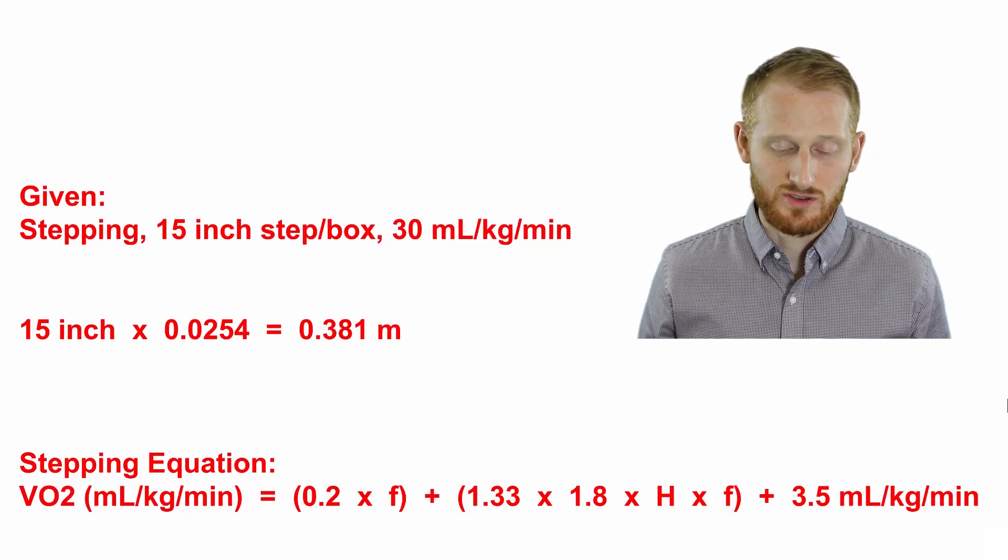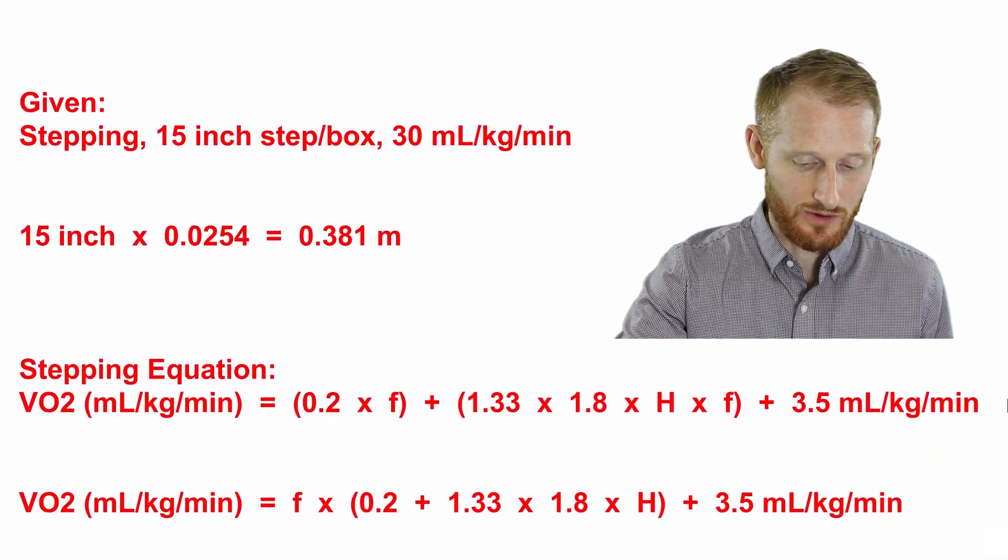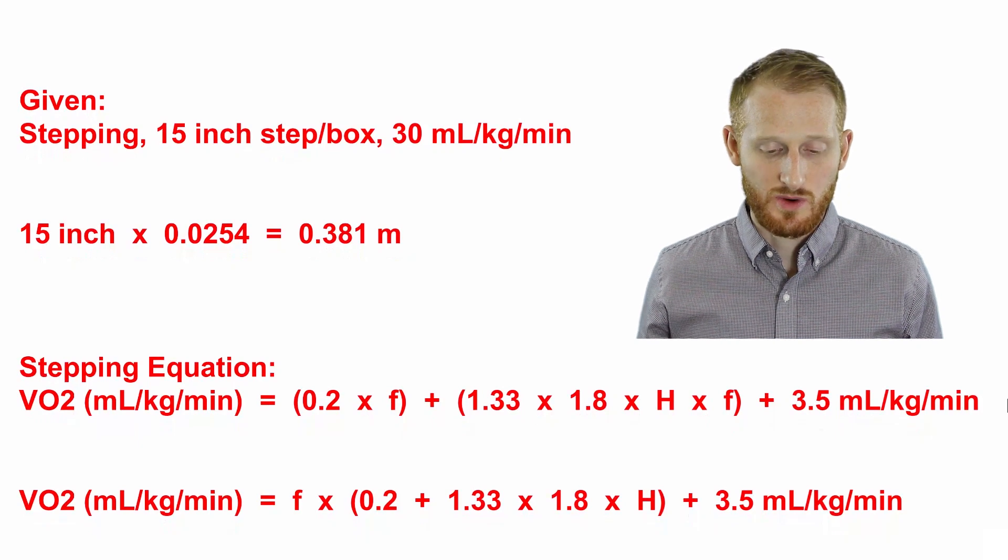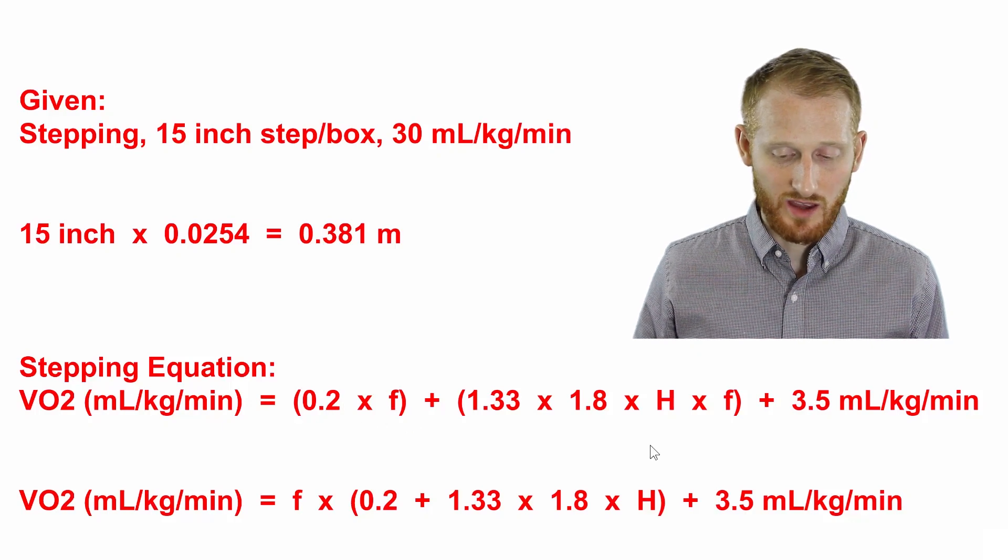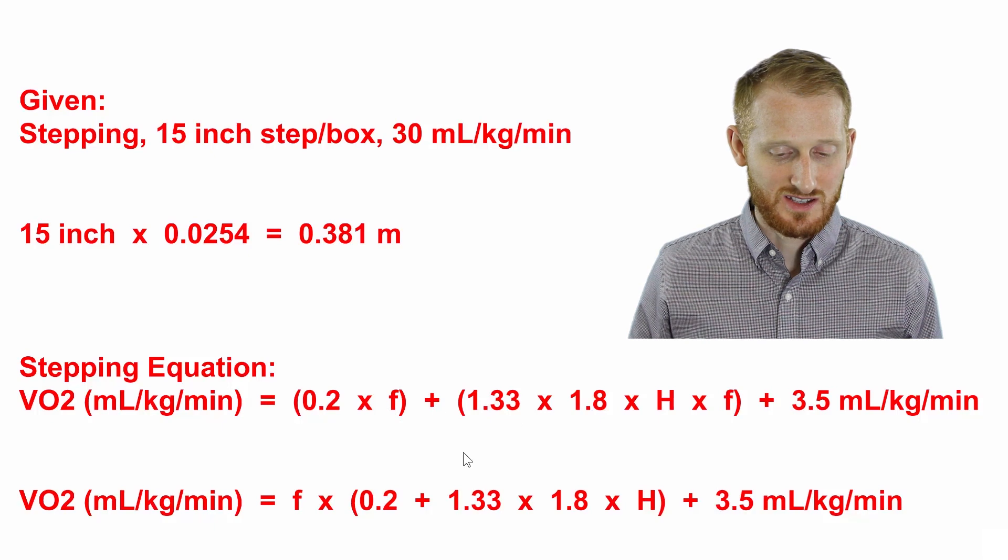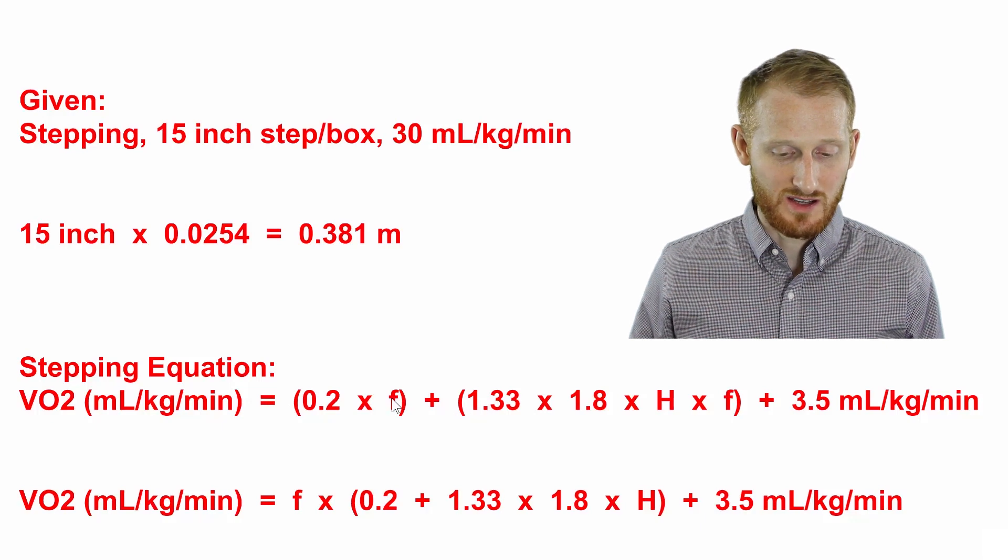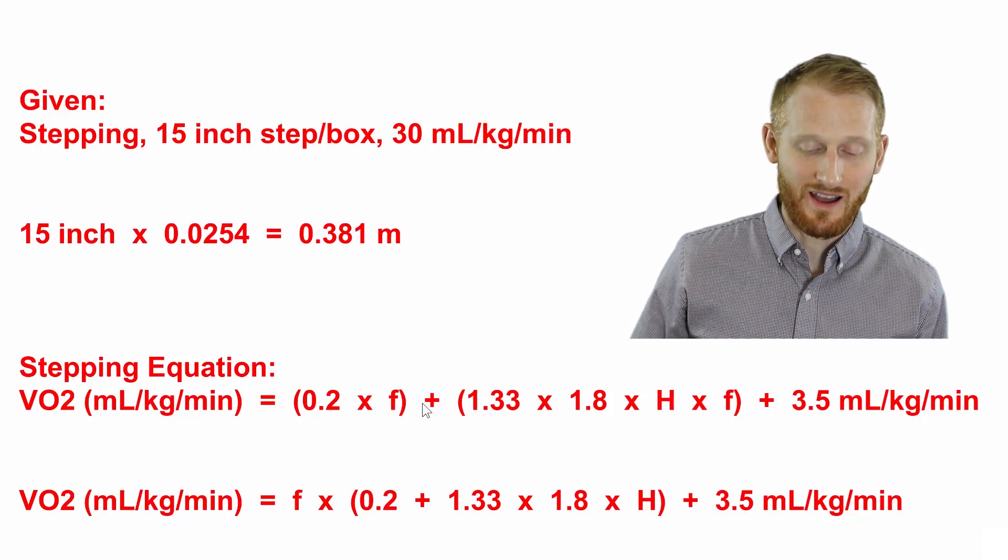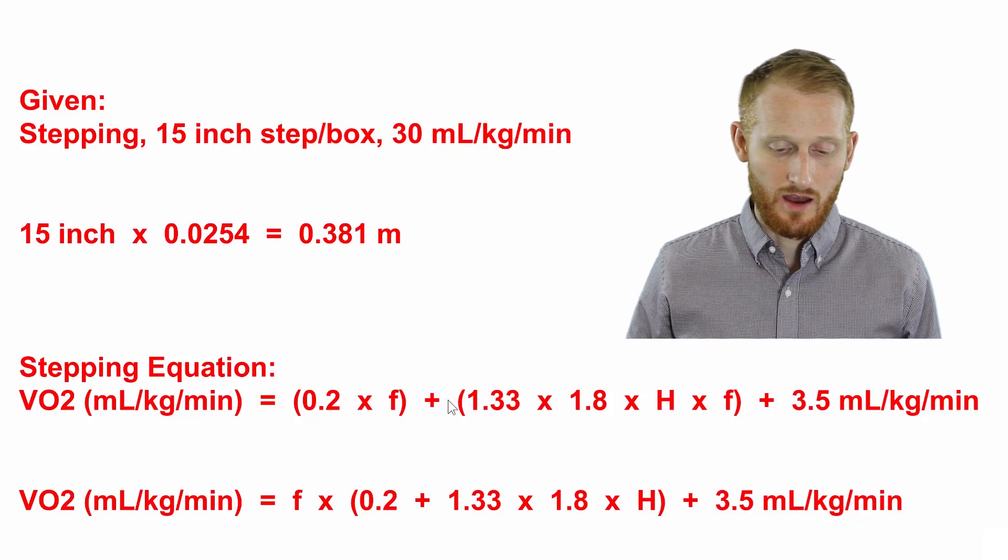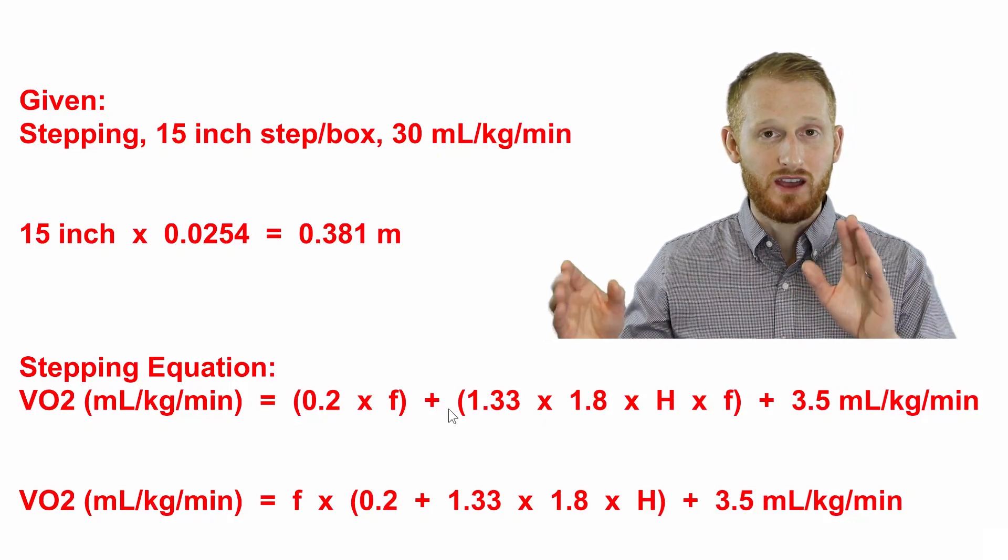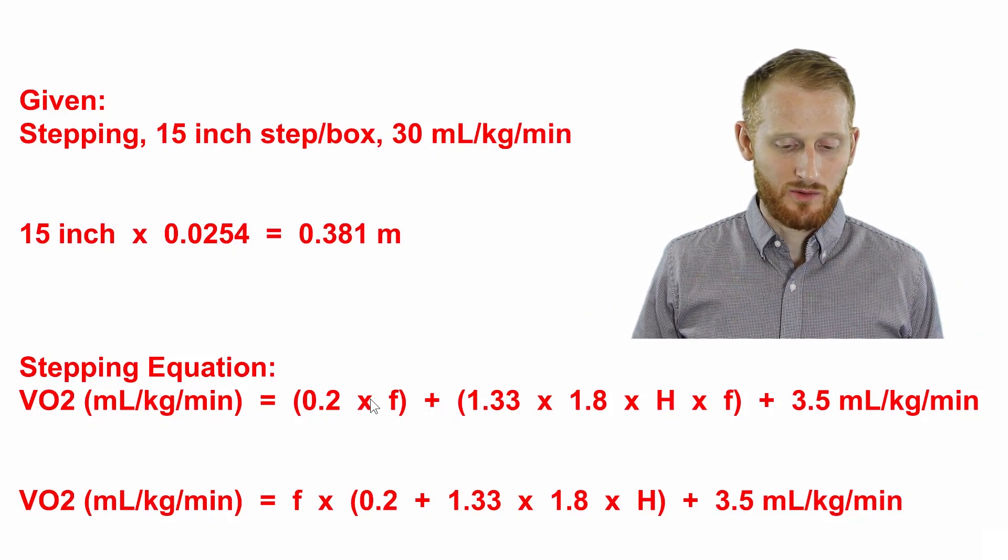So we need to rearrange this in order to isolate the f, which is the frequency. The first thing we need to do is we have two f's in this equation, so we need to combine them so that we only have one f. We have a set of parentheses here with an f, another set of parentheses here with an f, and an addition sign in between them. If we pull the f out of each of these sets of parentheses, we need to multiply the 0.2 and multiply the 1.33 times 1.8 and the H, but we're going to put the f on the outside.